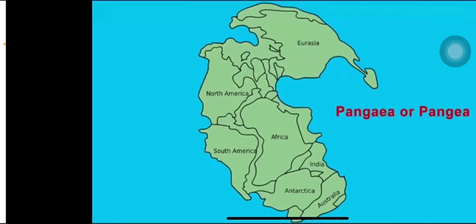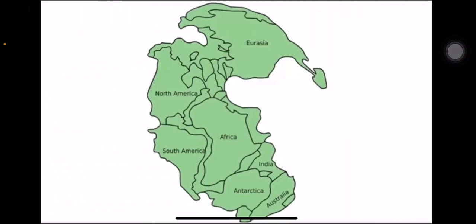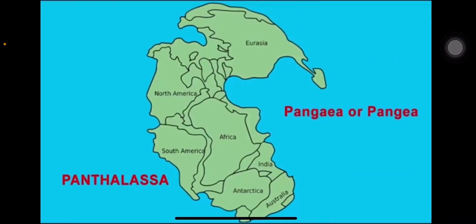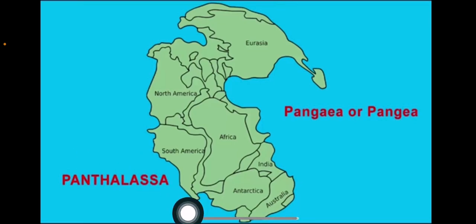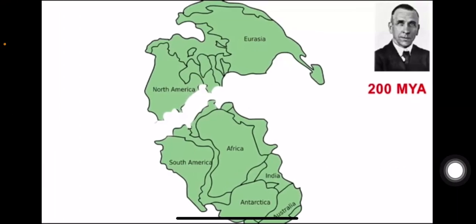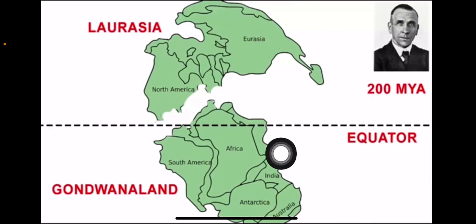This is Pangea — 200 million years ago, the land masses were joined together as one supercontinent called Pangea. The equator runs through it, and we can see the full land mass of Pangea divided into two parts.